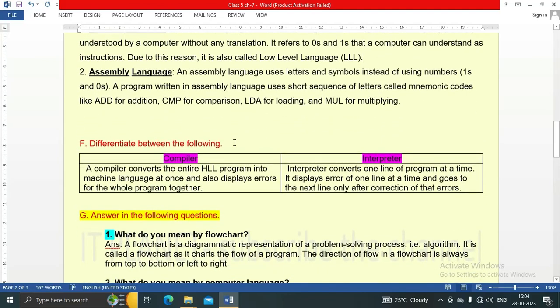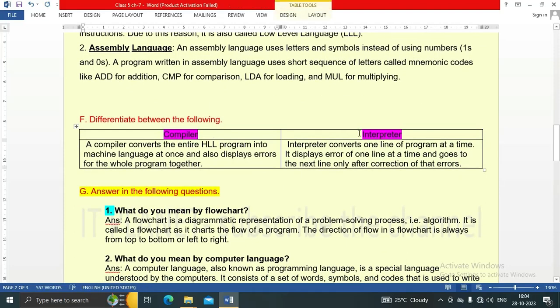Question F: differentiate between the following. First is compiler and second is interpreter. A compiler converts the entire HLL program—high level language program—into machine language at once and also displays errors for the whole program together. Interpreter converts one line of a program at a time. It displays error of one line at a time and goes to the next line only after correction of that error. This is the major difference between compiler and interpreter.